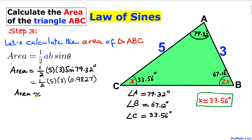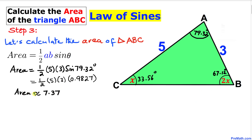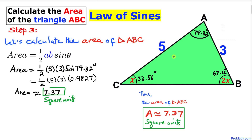Calculating: ½ × 5 × 3 × 0.9827 gives an area of approximately 7.37. So the area of triangle ABC is approximately 7.37 square units. That's our final answer. Thanks for watching — please don't forget to subscribe to my channel for more exciting videos!